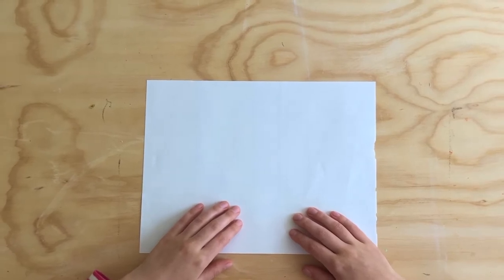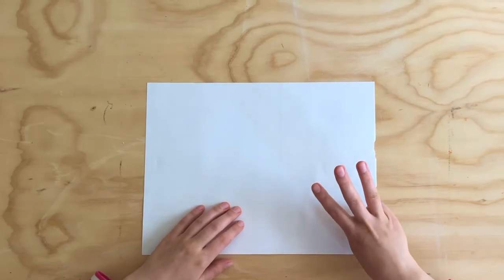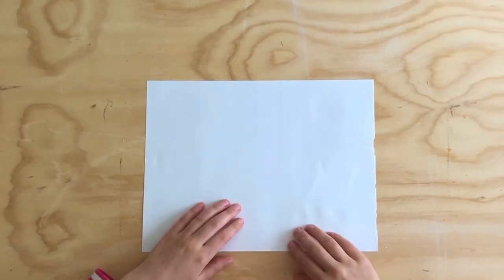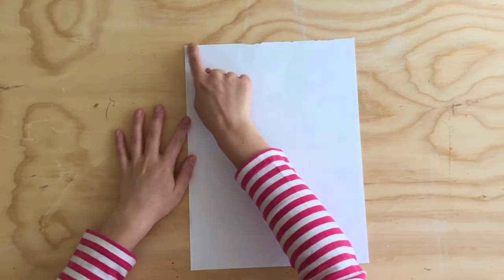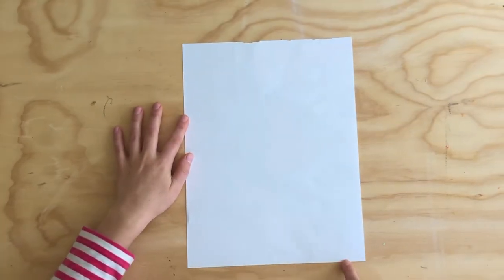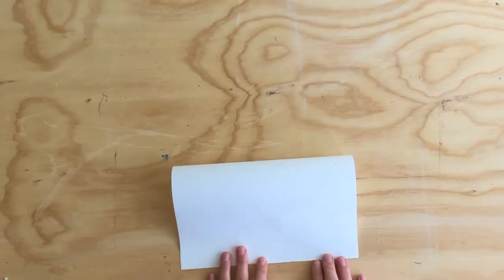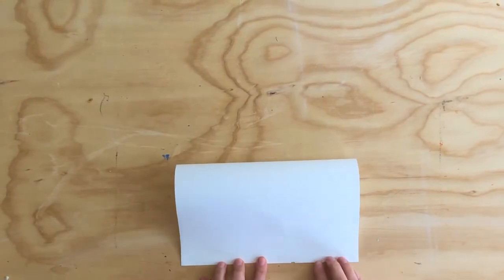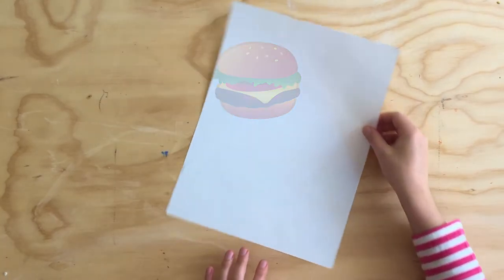All we're going to do is the hamburger fold three times. Some of you might know this, but a hamburger fold is when you have the two short edges of your paper come to meet each other just like this. So this is the hamburger fold, and we're gonna need to do that three times.